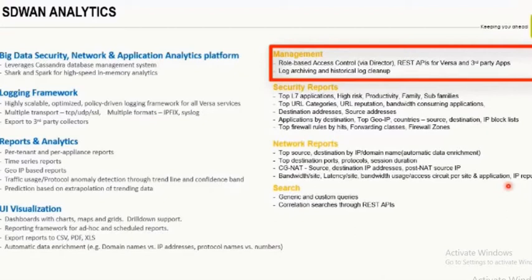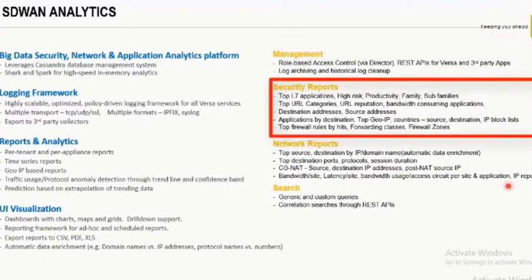Log archiving is performed every seven days. Security reports capture L7 applications, URL categories based on IP reputation, and URL reputation. They also show the top bandwidth-consuming applications on the branch, top source IPs consuming the highest amount of bandwidth, and top destination IPs being browsed or accessed.